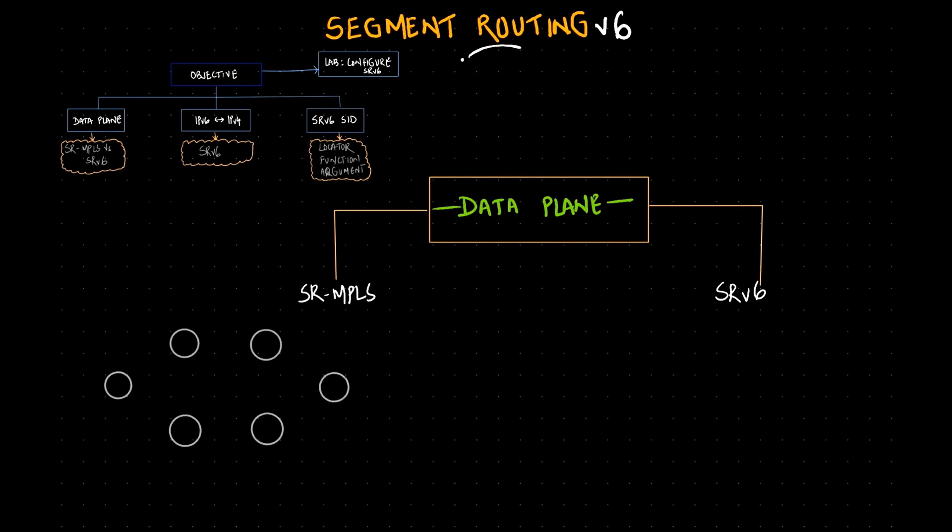One through six - one is my source and six is my destination. When a packet travels through an MPLS network, we need a stack. Based on that stack we need labels. Based on those labels it will identify which hop it will go and from that hop we can traverse to the destination.